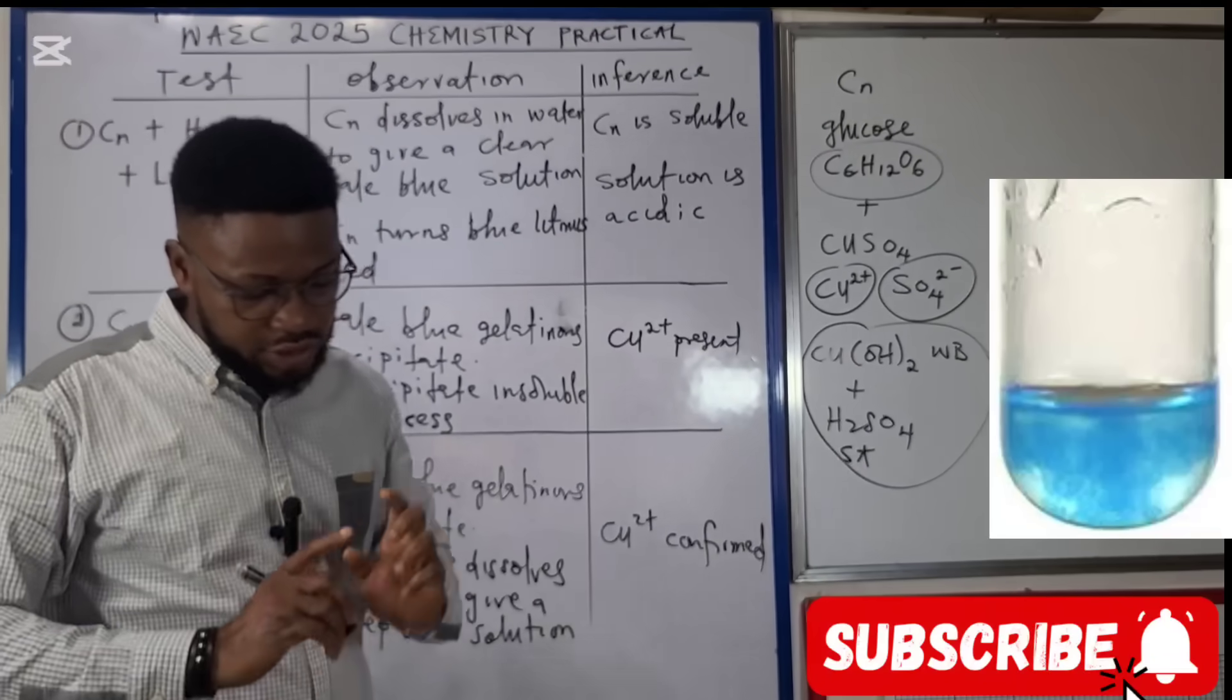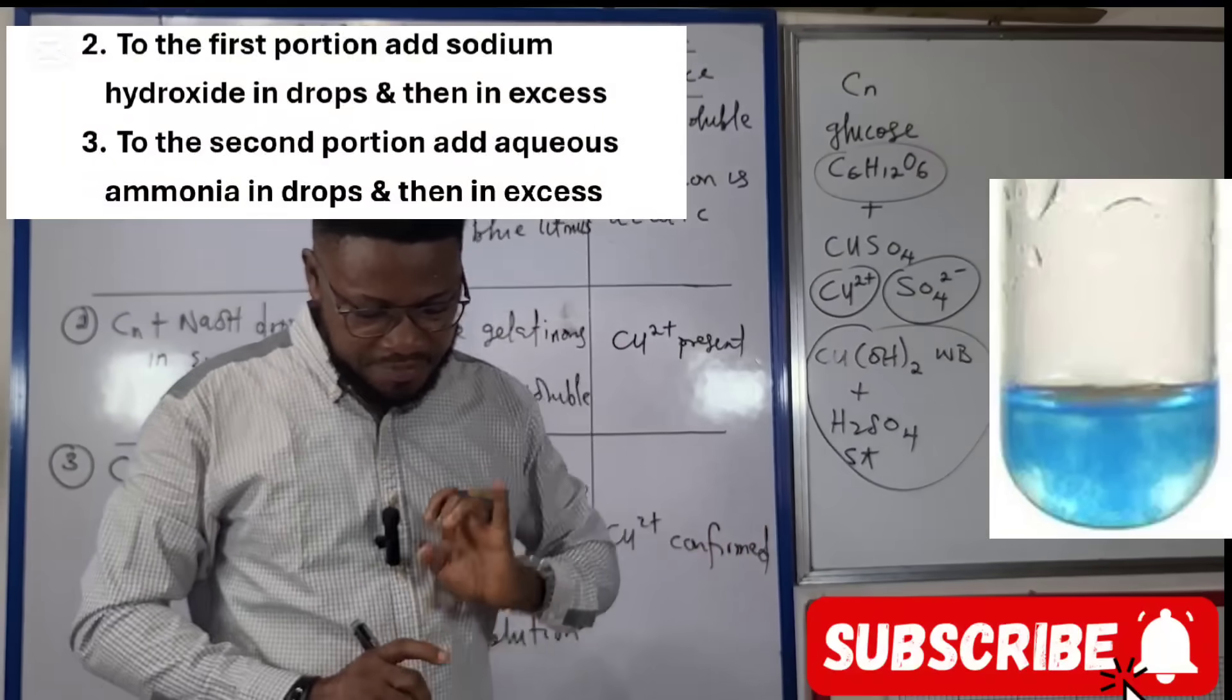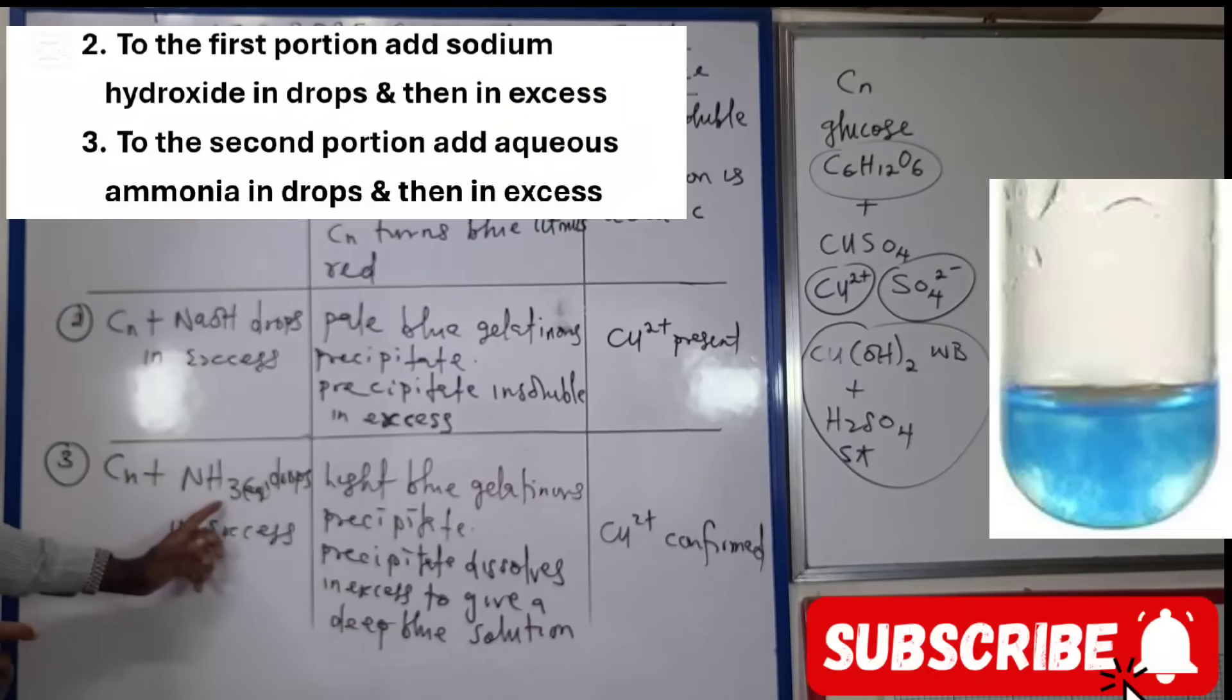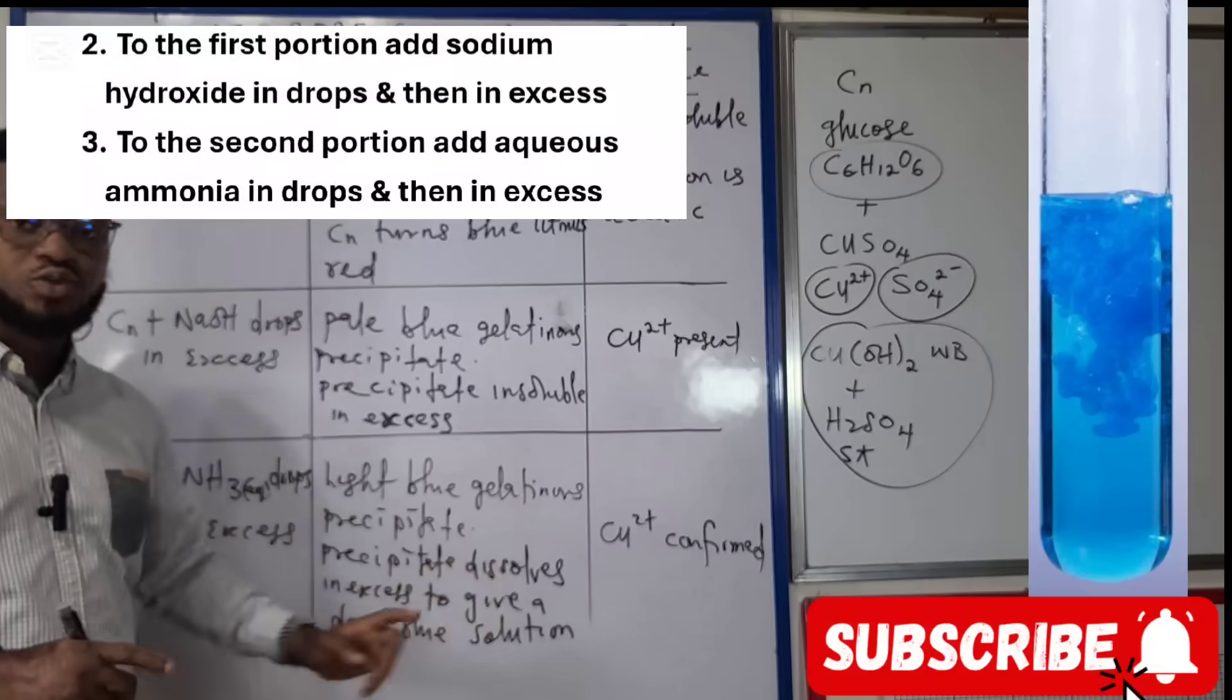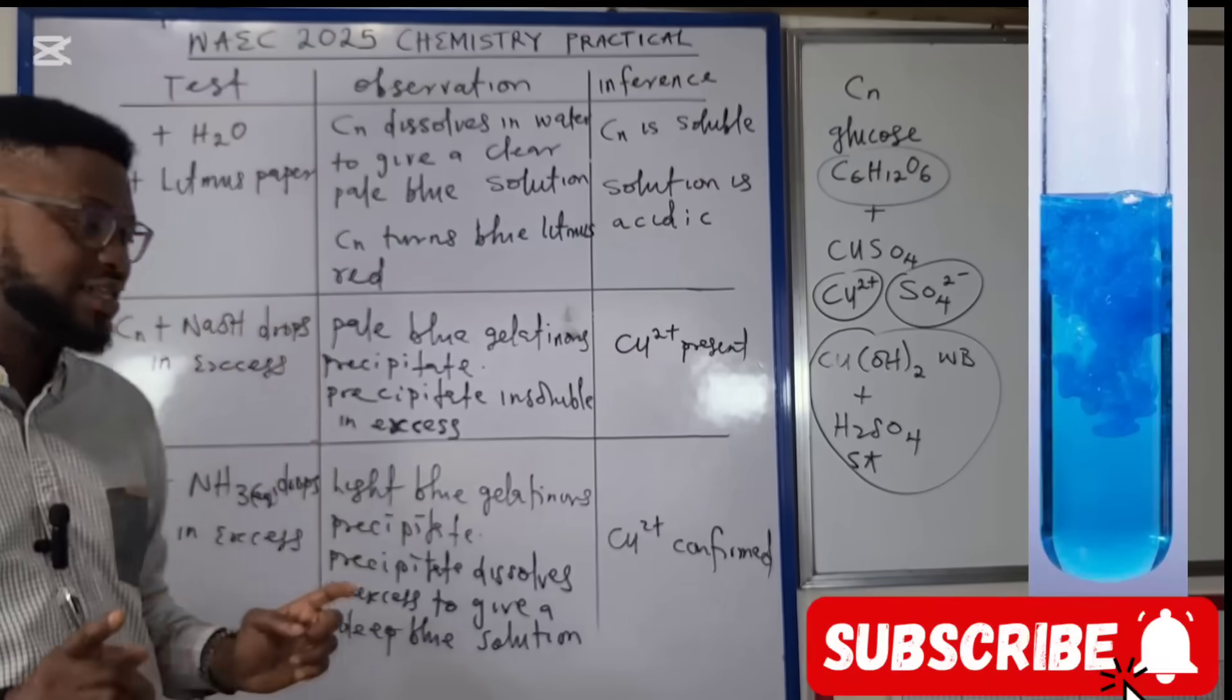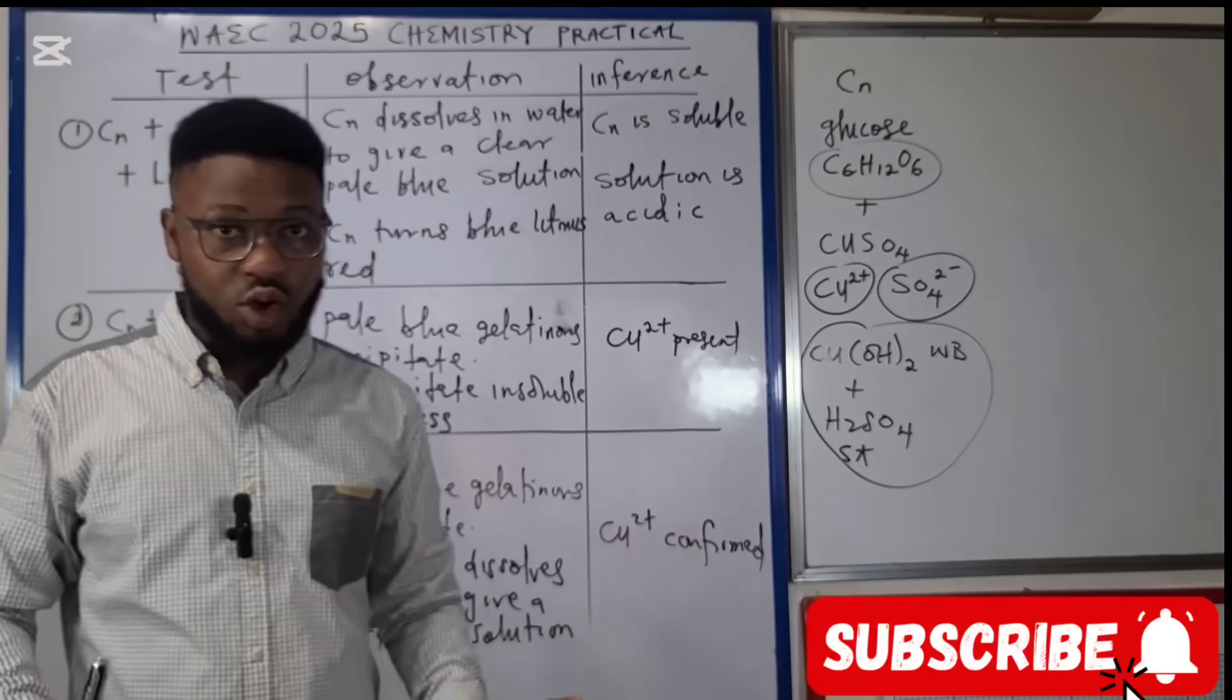To the second portion, add aqueous ammonia in drops and then in excess. CN plus aqueous ammonia in drops or in excess, we're also going to have a pale blue gelatinous precipitate. But in this case, on adding excess aqueous ammonia, the precipitate dissolves to give a deep blue solution. You can see that on your screen. That way, copper two ion is confirmed.